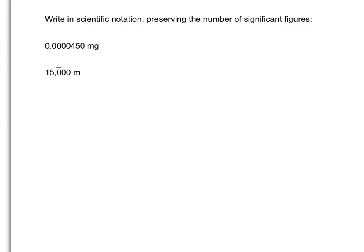Next we're going to put some numbers into scientific notation, preserving our number of significant figures. Looking at the first number — decimal point, count to the right, three significant figures — we want to make sure we have three significant figures when we're done. We move the decimal point so we have just a single non-zero digit in front of it. We move it until the four is in front of the decimal point: 4.50 times ten. We moved it five places, so it's times 10 to the negative fifth.